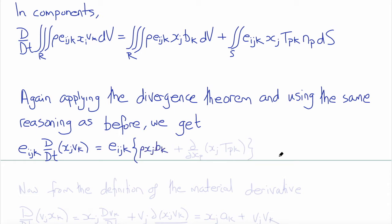equals the permutation symbol EIJK times the density Rho times XJ, BK, plus del del XP of XJ times TpK.